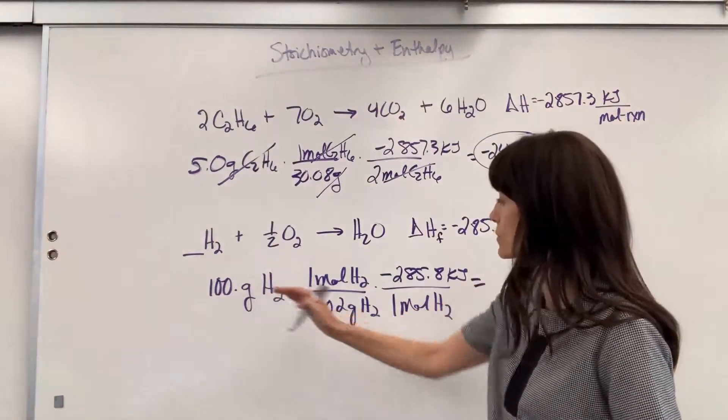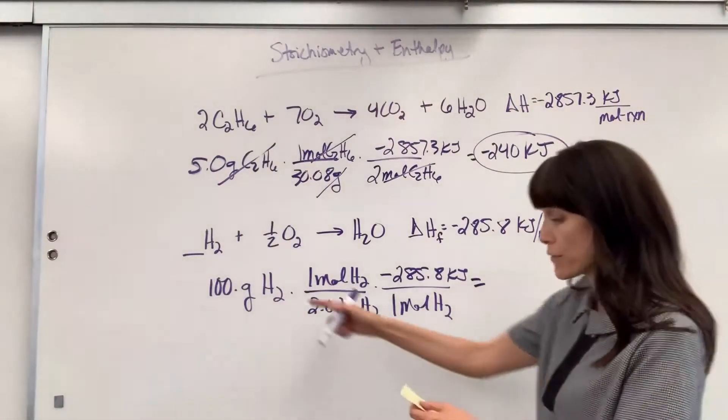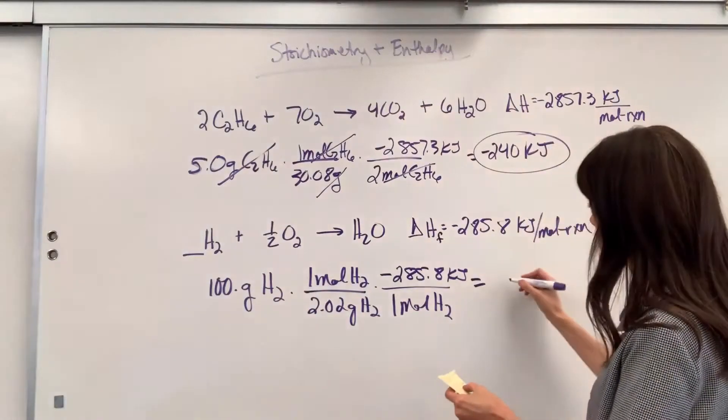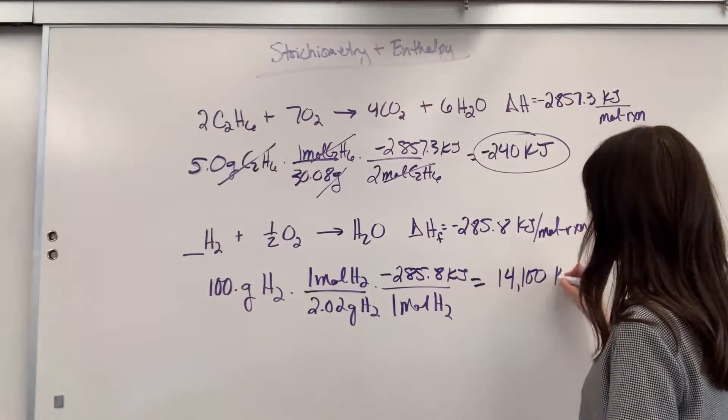Okay, do this math. 100 divided by 2.02 times the negative 285. And let's see, I have three sig figs on this. It's going to give me 14,100.